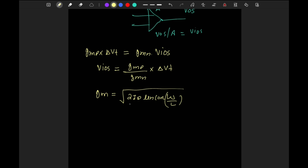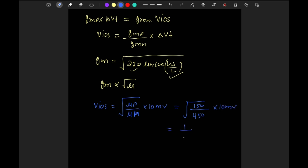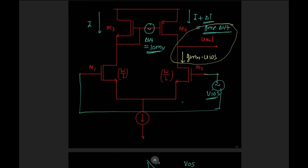Since gm is proportional to √(2 × I × μ × W/L), and bias current and W/L ratio are the same, gm is directly proportional to √μ. So Vios = √(μp / μn) × 10 mV. With μp = 150 and μn = 450, this gives Vios = (1/√3) × 10 mV. When we apply this amount of differential input voltage, it will cancel the mismatch current.